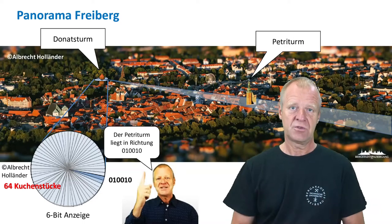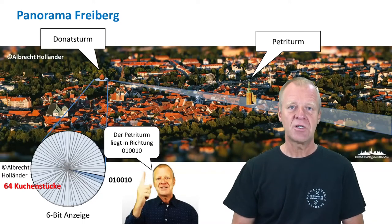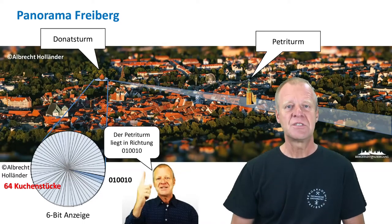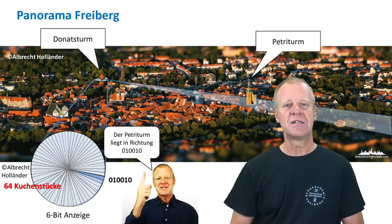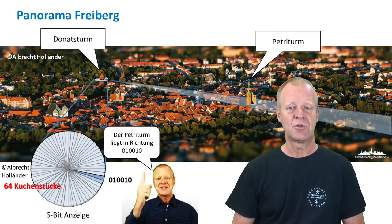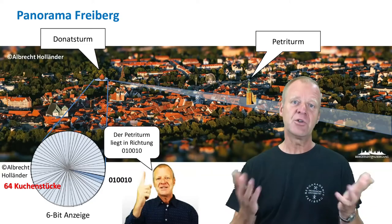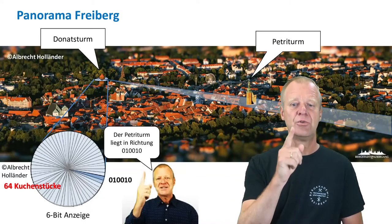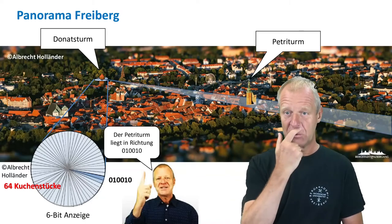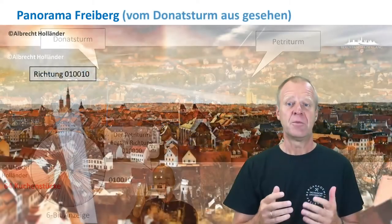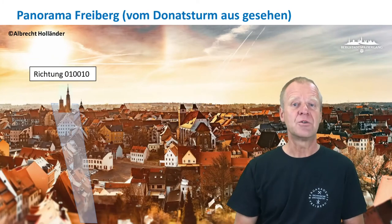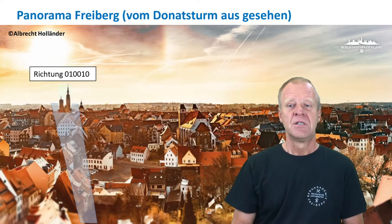Until we finally have six bits per piece. This results in a total number of 64 cake pieces, so we have a pretty precise location of the direction of the Petri Tower. We can now say from the Donuts Tower, the Petri Tower is located in the direction 0, 1, 0, 0, 1, 0. Looking from the Donuts Tower, it would look like this.